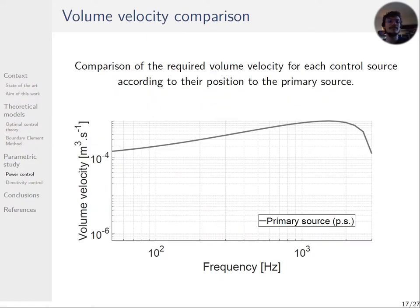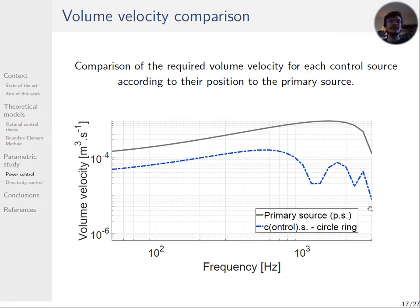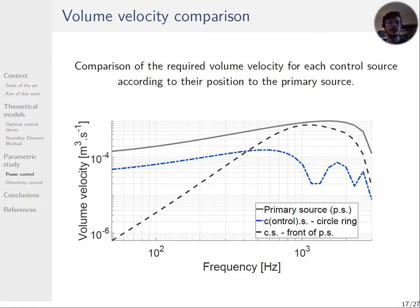So this curve is an estimated volume velocity of the trombone coming from a measurement of 4 notes: B0b, B1b, B2b and B3b, B0b played at high intensity. Then the case with three sources on a ring plus one source placed closer to the primary one is studied. This second curve is the required volume velocity for one of the three sources placed on the circle ring. And the third curve is for the source on the axis. At this stage, the needed volume velocity for the last source is higher in high frequency.